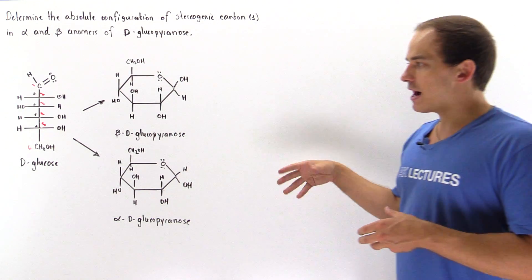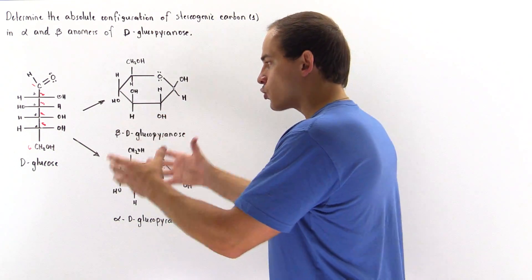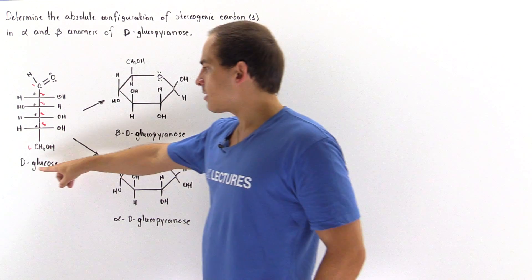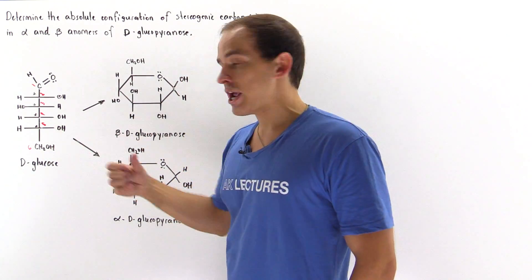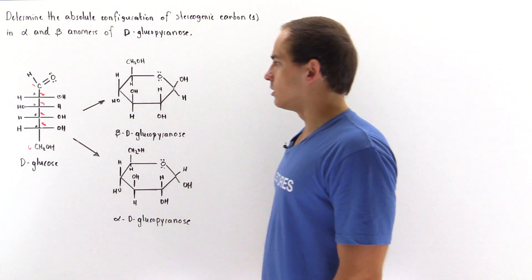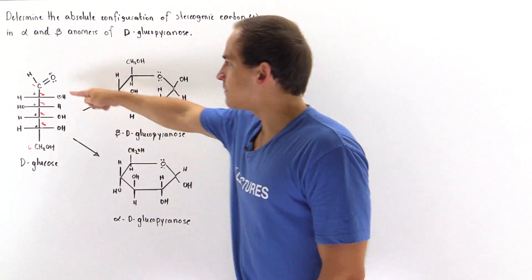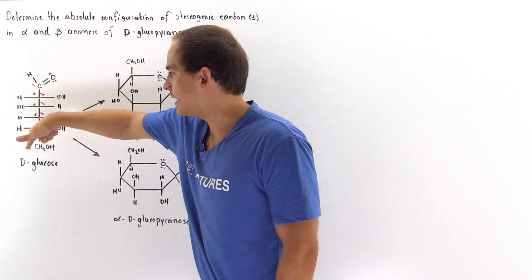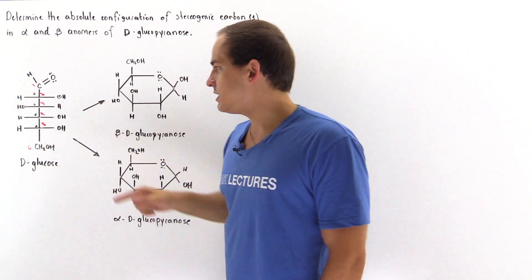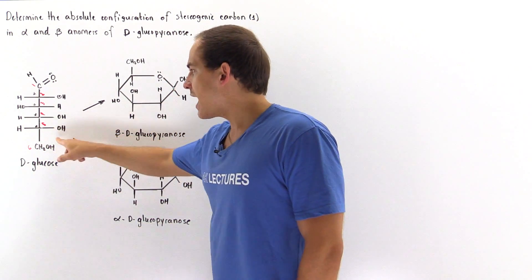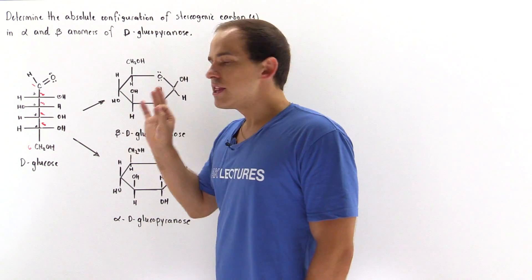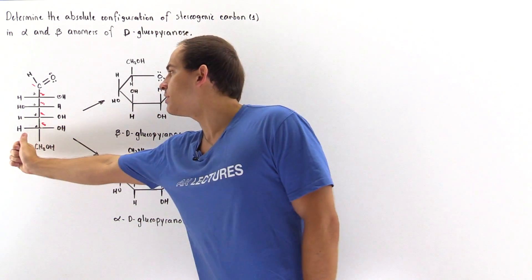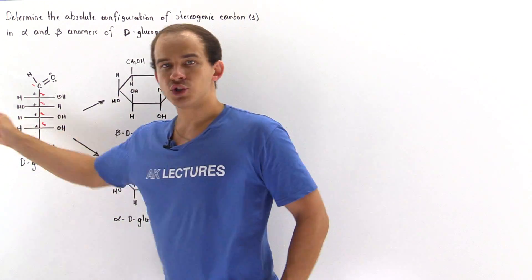Let's begin by looking at our straight chain glucose and its ring counterpart. When we have our D-glucose in its straight chain form, we have a molecule with six carbons: carbon number one, two, three, four, five, and six. The D part of D-glucose implies that the hydroxyl group that will act as the nucleophile basically points to the right and not to the left.